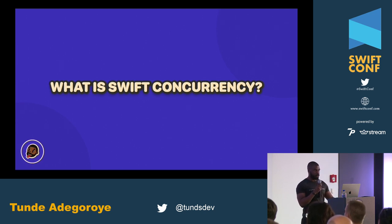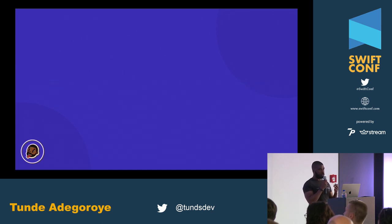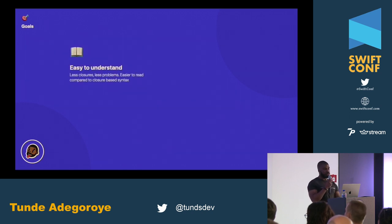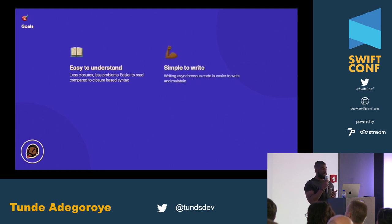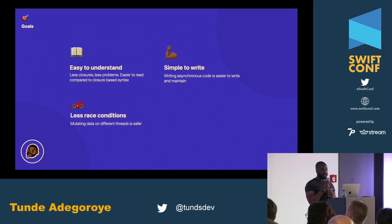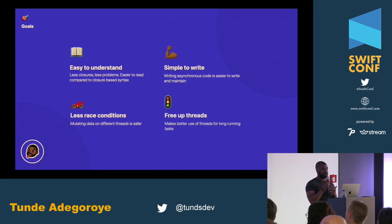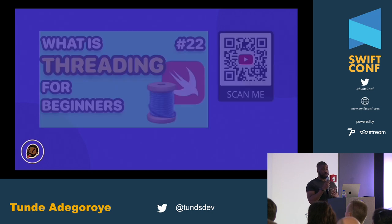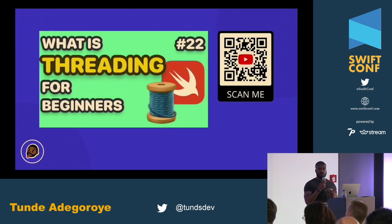So what is Swift Concurrency? Swift Concurrency was recently released by Apple and it's a way for us to easily do concurrent code with new programming language updates. Some of the goals are to make it easy to understand asynchronous code, write less closures, have more inline readable code, introduce fewer race conditions, and utilize threads more effectively to get the most out of our iOS applications.